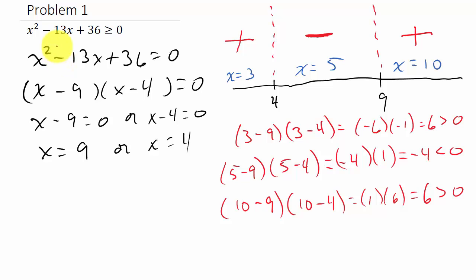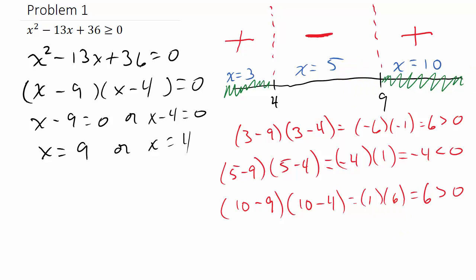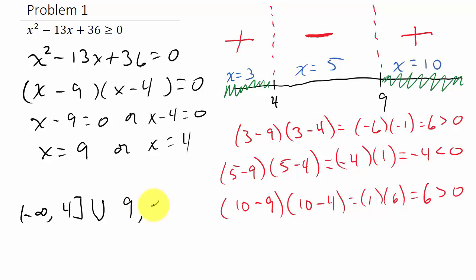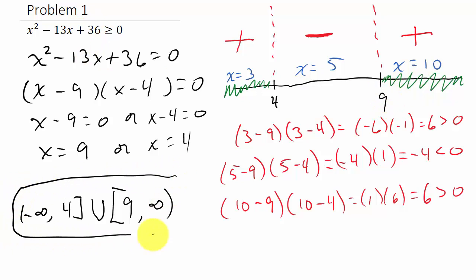We want to know when this quadratic function is greater than or equal to 0 — that is, when is it positive. We can see it's positive for values less than 4 and positive for values greater than 9. So the solution is from negative infinity to 4, with a bracket on 4 because of the 'or equal to' condition, union 9 to infinity, with a bracket on 9 as well.